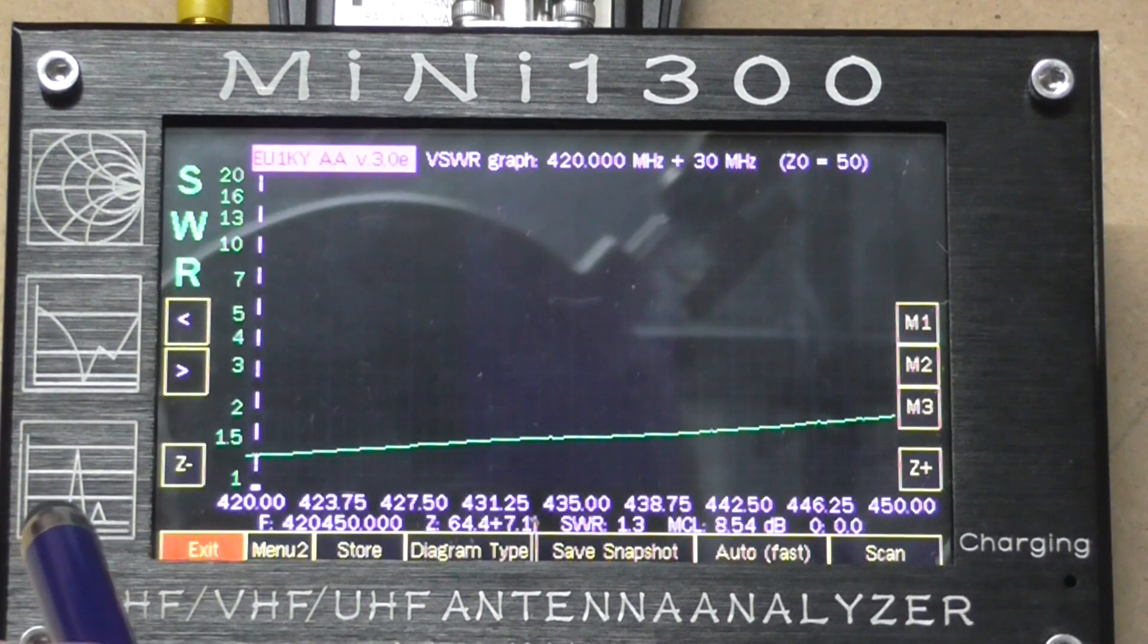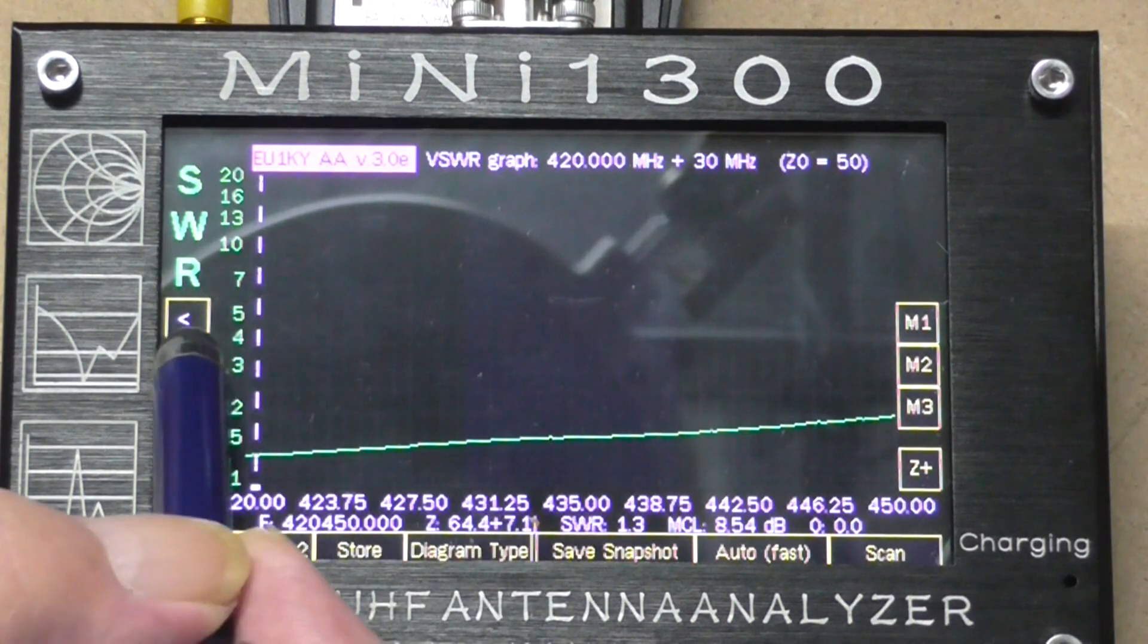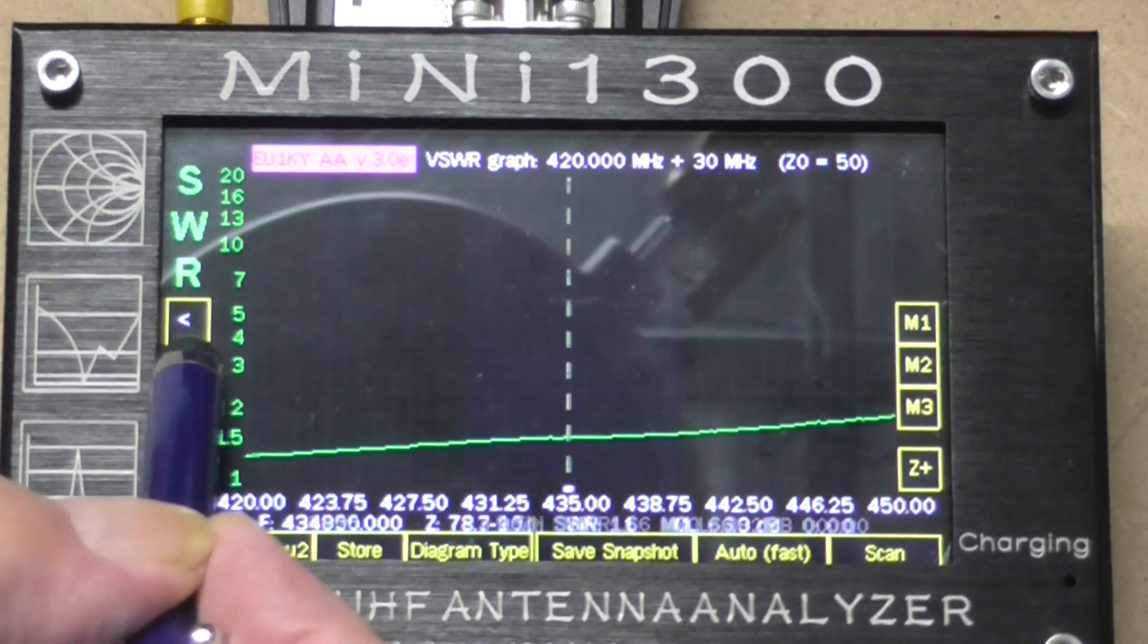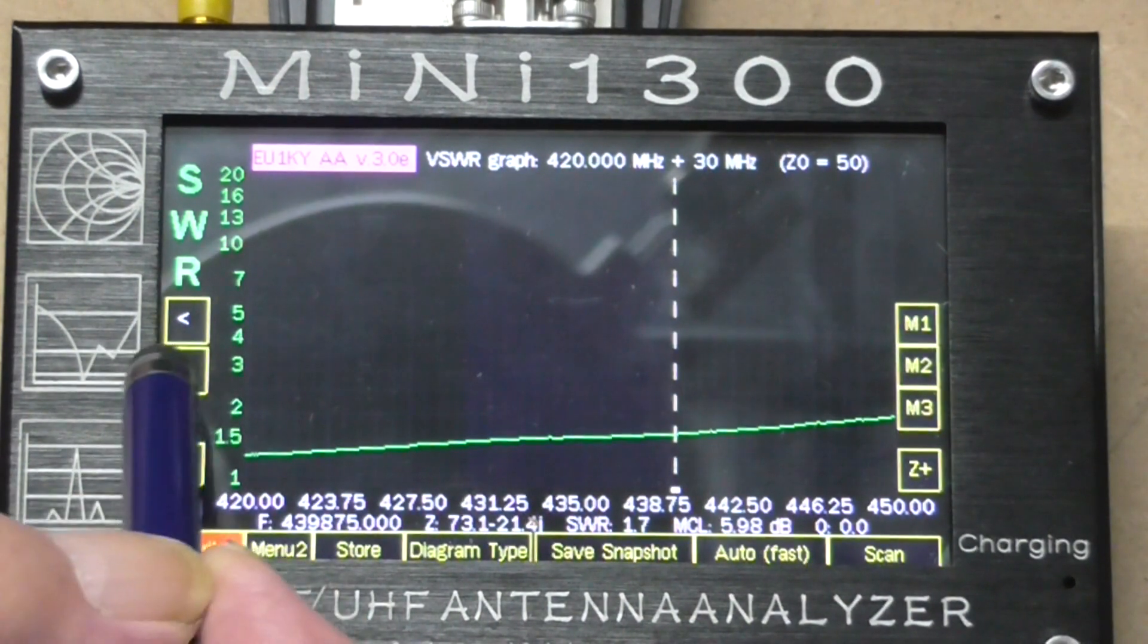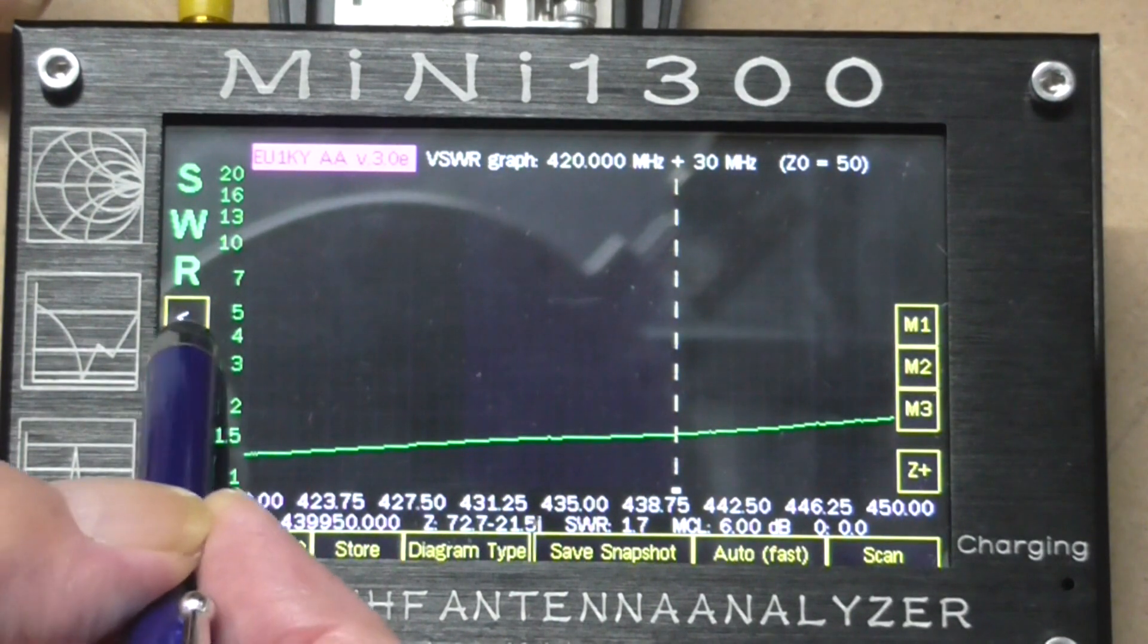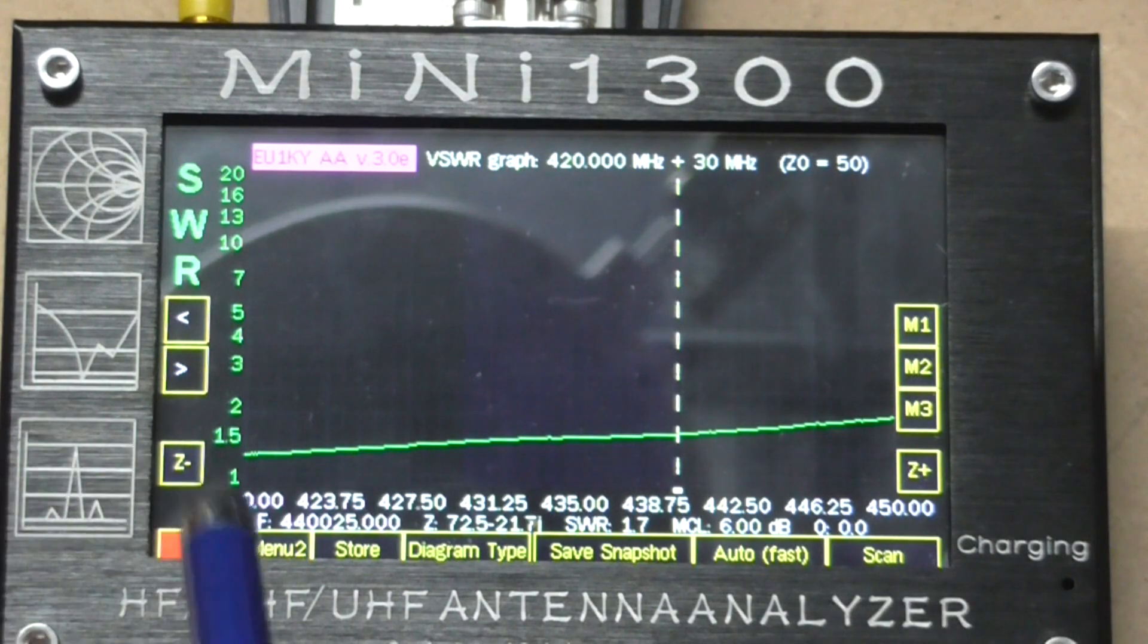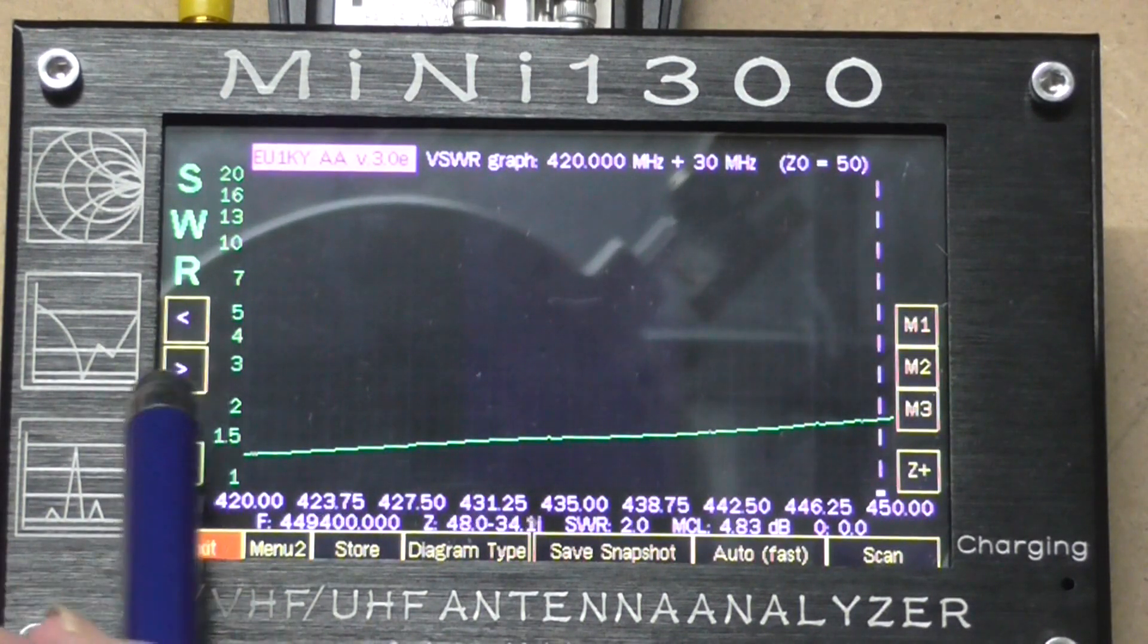Start down here, it's just above 420 megs and we've got an SWR of 1.3 to 1. We scroll up through and we're sitting here at 440 megs, SWR is 1.7 to 1. That to me would not be acceptable as an SWR. It's usable, obviously anything below 2 is usable, but I don't like throwing my hard-earned power away.